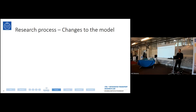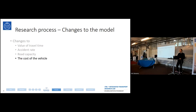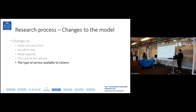What I actually did to investigate this was to make a number of changes to SAMPERS to evaluate the different scenarios. I made changes to the value of travel time, accident rates, road capacity, cost of vehicles, and also the type of service available to citizens — mainly some sort of on-demand service that replaced a normal bus service with a fixed line in Papers A and B, but not in Paper C which used a normal fixed line instead.